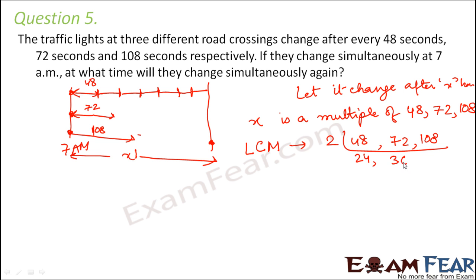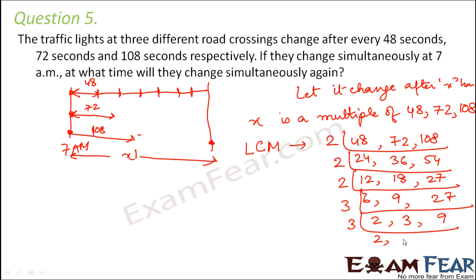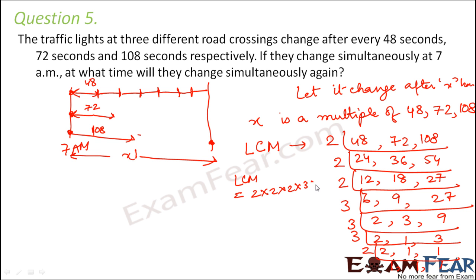Performing the prime factorization: dividing by 2 repeatedly gives us factors, then dividing by 3. The LCM works out to 2 × 2 × 2 × 2 × 3 × 3 × 3, which equals 16 × 27 = 432.